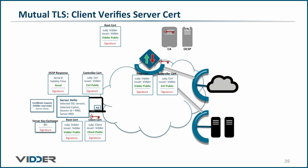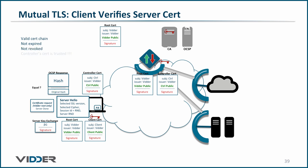Now, the client must verify the controller's certificate. First, it takes a hash of the controller's certificate using the hashing algorithm specified on the certificate. Then, it uses the root certificate's public key to decrypt the signature and reveal the hash that the issuing CA performed initially. Then, it compares those two hashes. If they are equal, then it has verified that the certificate is valid. It also checks the validity time to make sure the certificate has not expired. Now, it must make sure the certificate has not been revoked by checking that the stapled OCSP response says it is good. Hence, the certificate has not been revoked, and the client can now trust the controller's certificate.